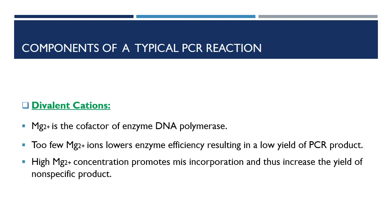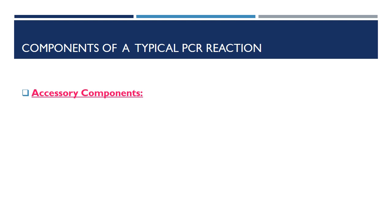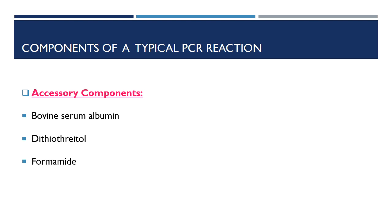Accessory components are sometimes used to optimize reactions. They include bovine serum albumin, which binds inhibitors and stabilizes the enzyme; dithiothreitol, which provides reducing conditions that may enhance enzyme activity; formamide, added to the mixture to lower the denaturing temperature of DNA with high secondary structures, thereby increasing the availability for primer binding. Chaotropic agents such as Triton X-100, glycerol, and dimethyl sulfoxide also reduce secondary structure to allow polymerase extension through difficult areas, and contribute to the stability of enzymes as well.